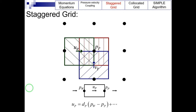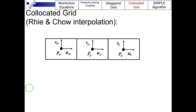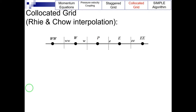Another method to solve the checkerboard problem is to use the collocated grid, where both velocity and pressure values are stored in the center of the control volumes. In the collocated grid, the interpolation method to calculate velocities on the surfaces of control volumes is changed, and the Rhie-Chow interpolation technique is used instead. In 1983, Rhie and Chow proposed the use of a collocated grid. To describe the proposed method, consider the eastern surface of the control volume as shown in this figure.